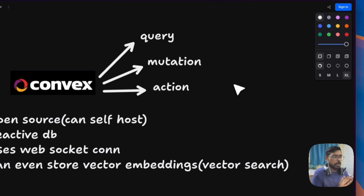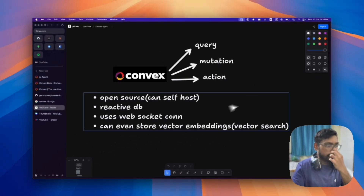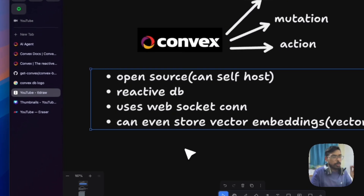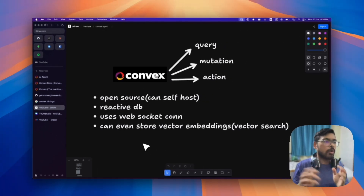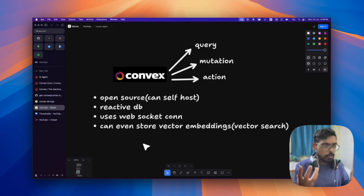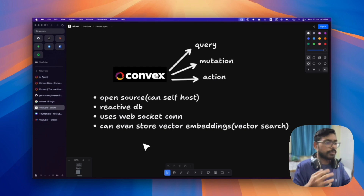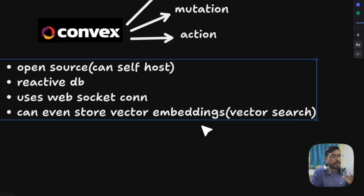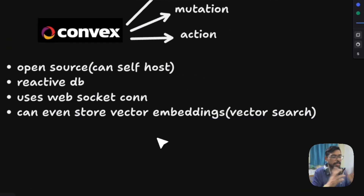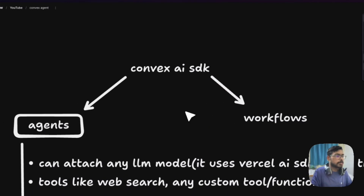Convex is basically a backend-as-a-service with a reactive database. It uses WebSocket connections under the hood so the client and the cloud — whether self-hosted or their own cloud version — stay in sync. Changes are instantly shown in the UI, which gives a really good developer experience. They also have vector embeddings for RAG as part of the AI features.